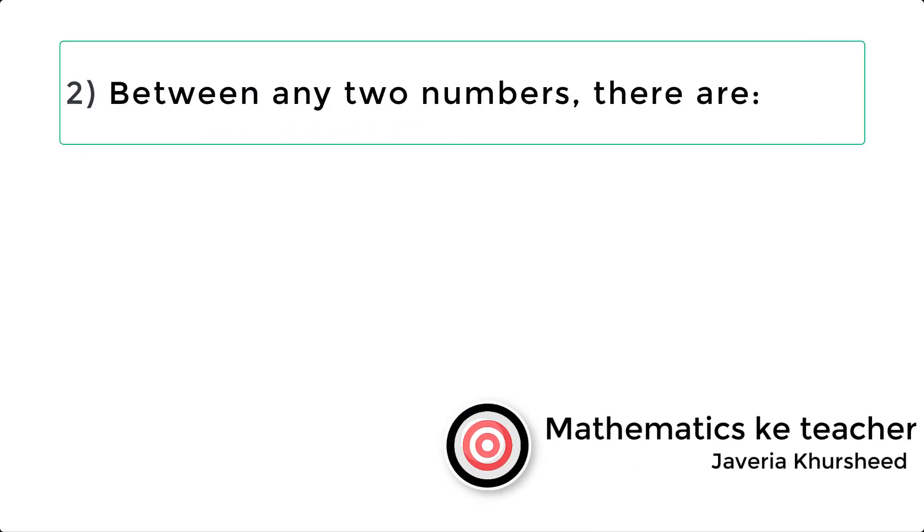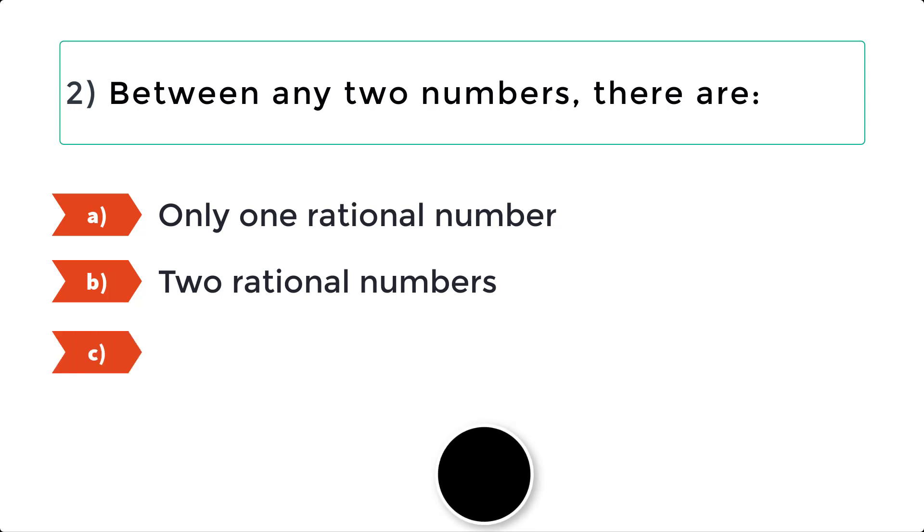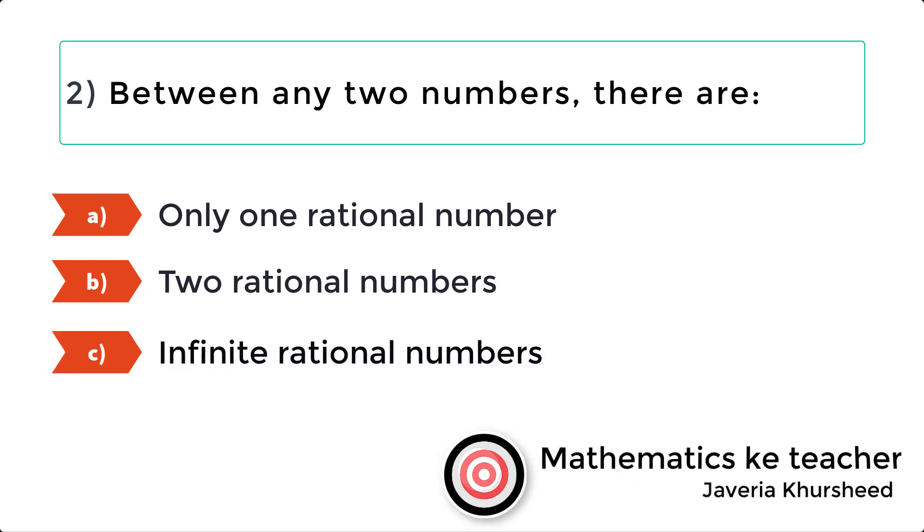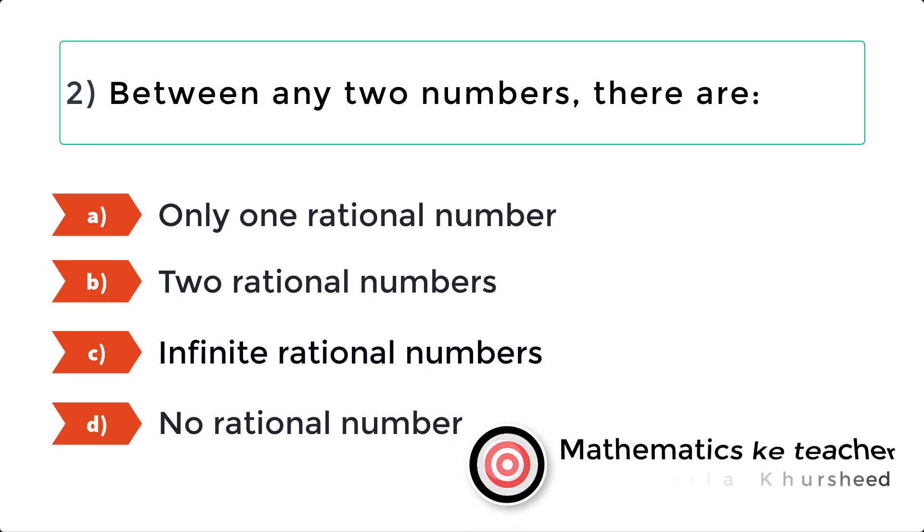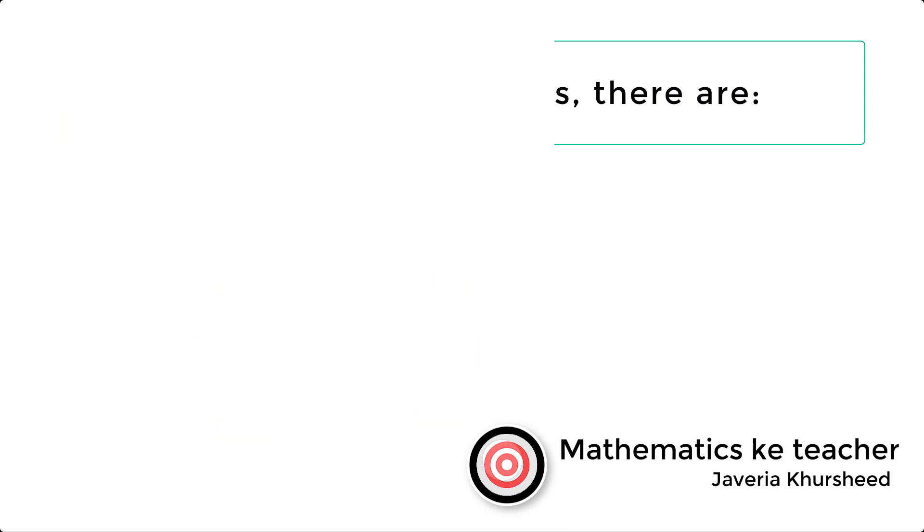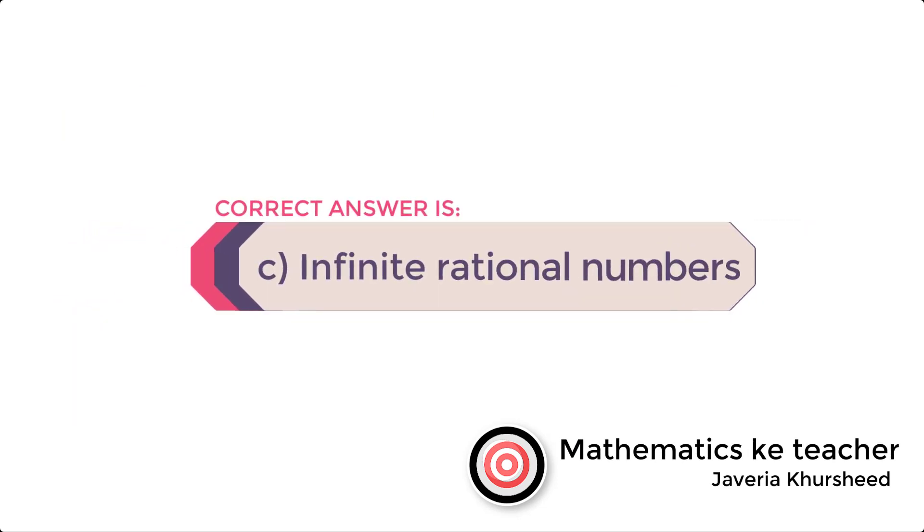Question 2: Between any two numbers, there are A: only one rational number, B: two rational numbers, C: infinite rational numbers, D: no rational number. Correct answer is C, infinite rational numbers.